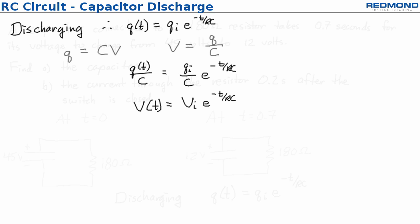At this point I can actually just take a look and see what do I know. I know that the voltage at 0.7 seconds is 12 volts. I know the initial voltage is 45. I know the time is 0.7 seconds. I know the resistance. The only unknown in this equation is the value of the capacitance and that's actually what it's asking for in the first part of the problem.